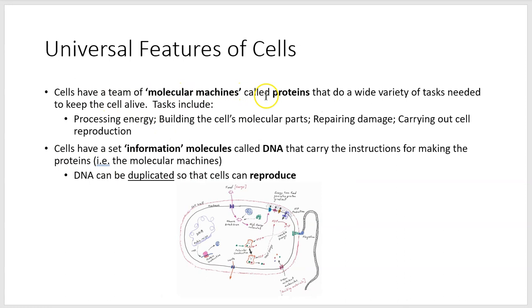Cells have a team of molecular machines called proteins that do a wide variety of tasks needed to keep the cell alive, like processing energy, building molecules, repairing damage, carrying out cell reproduction, like duplicating DNA. And cells have a set of information molecules called DNA that carry the instructions for making the proteins. And DNA importantly can be duplicated. And that allows these cells to reproduce.